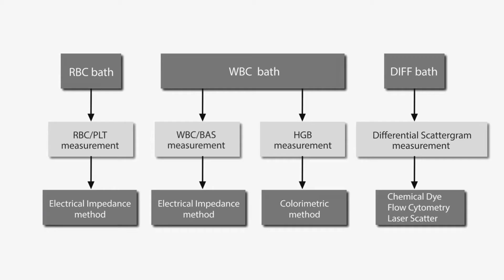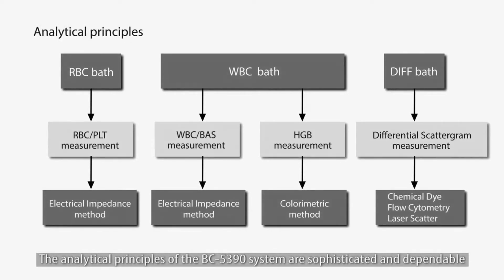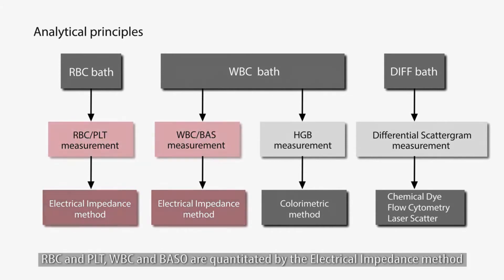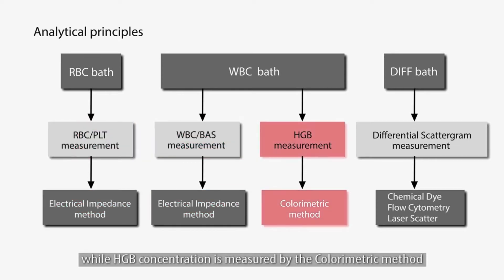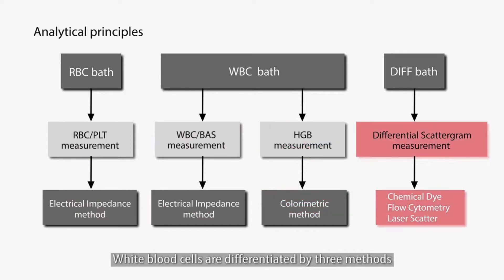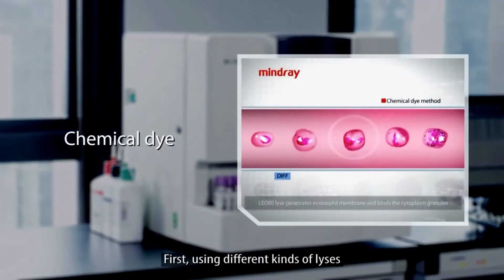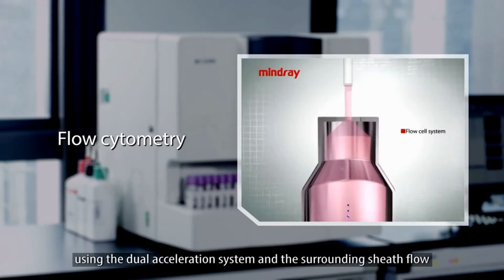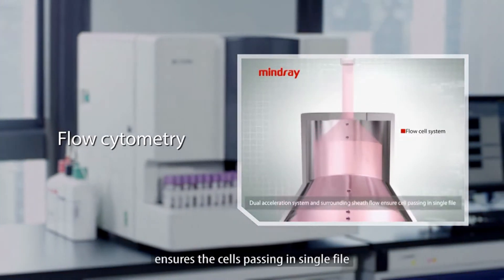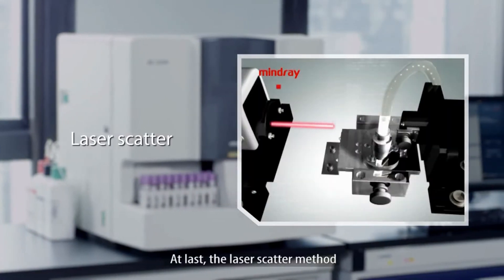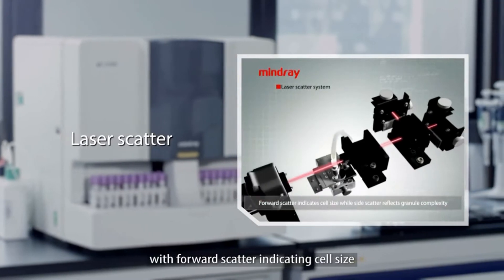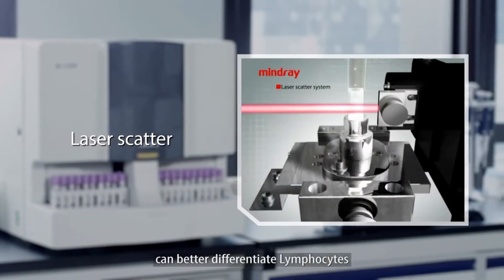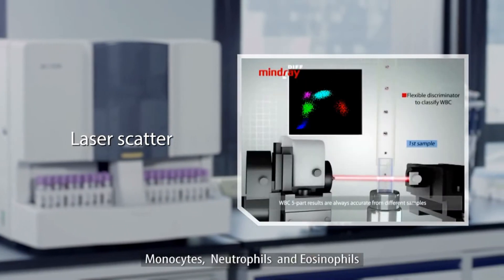The analytical principles of the BC5390 system are sophisticated and dependable. RBC and PLT, WBC and BASO are quantitated by the electrical impedance method, while HGB concentration is measured by the colorimetric method. White blood cells are differentiated by three methods: chemical dye, flow cytometry, and laser scatter. Using different kinds of lysis, chemical dye can change the properties of blood cells. The flow cytometry technology uses the dual acceleration system and surrounding sheath flow to ensure cells passing in a single file. The laser scatter method, with forward scatter indicating cell size and side scatter reflecting granular complexity, can better differentiate lymphocytes, monocytes, neutrophils, and eosinophils.